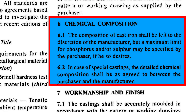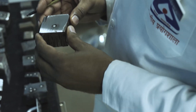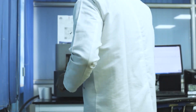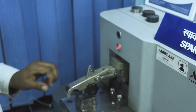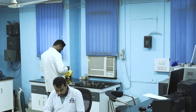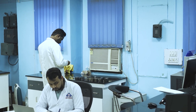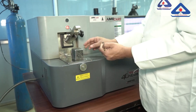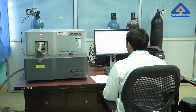Sulfur can be estimated with the help of a CS analyzer, which determines sulfur content by combustion in an induction furnace and measuring the resulting gases through infrared absorption. For special castings, the chemical composition can also be determined using spark optical emission spectroscopy. This technique analyzes the sample by creating a spark on its surface and measuring the emitted light, providing precise and rapid results and ensuring the castings meet required specifications.